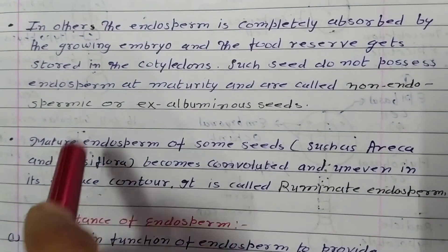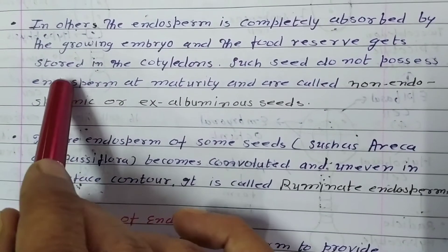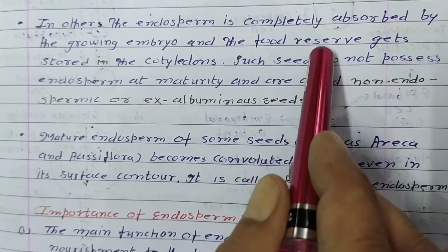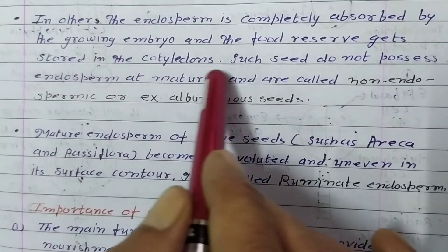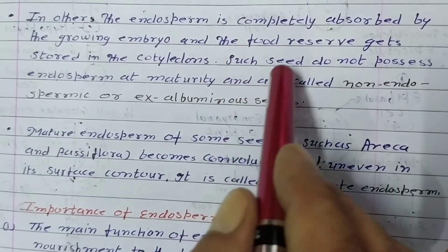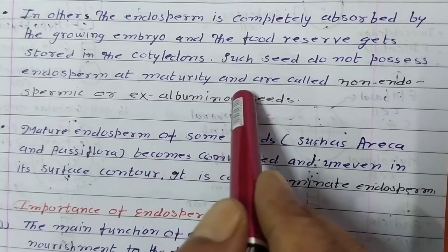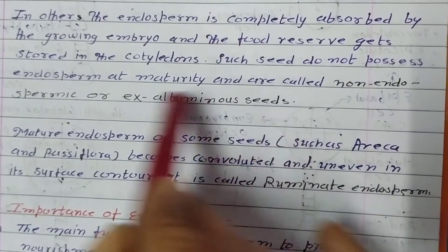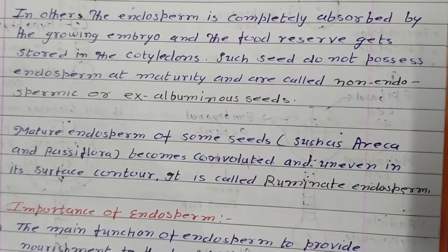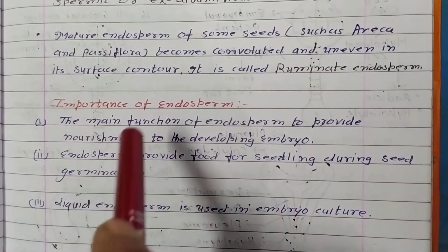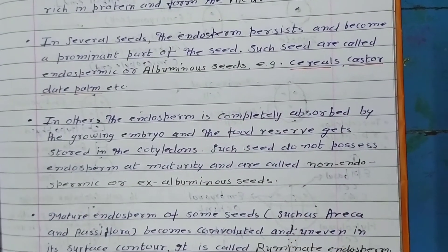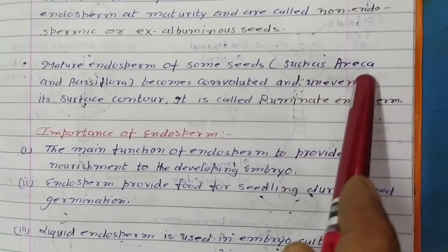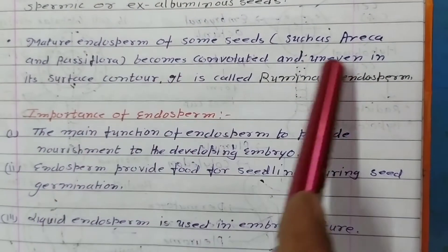In other seeds, the endosperm is completely absorbed by the growing embryo during development, and the food reserves get stored in the cotyledons. Such seeds do not possess endosperm at maturity and are called non-endospermic seeds or exalbuminous seeds. So seeds are of two types: endospermic seeds and non-endospermic seeds.